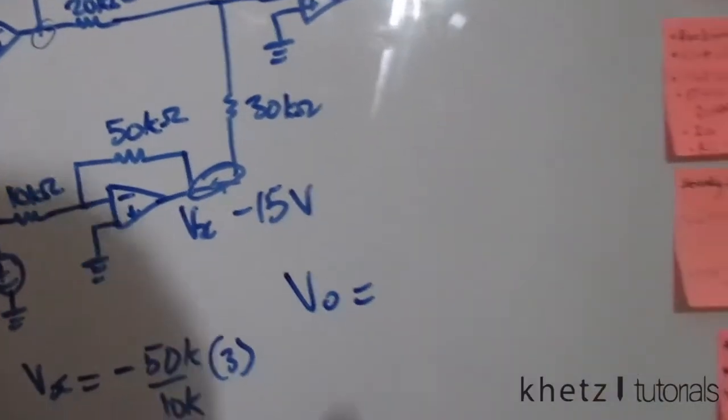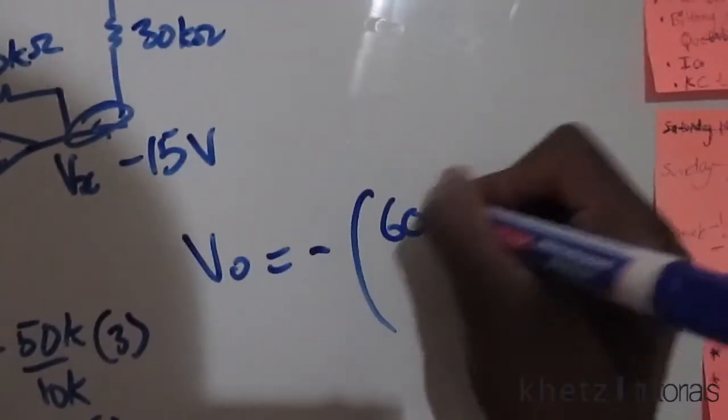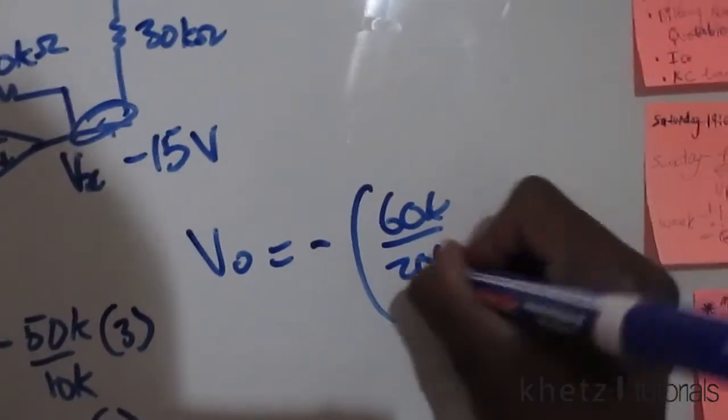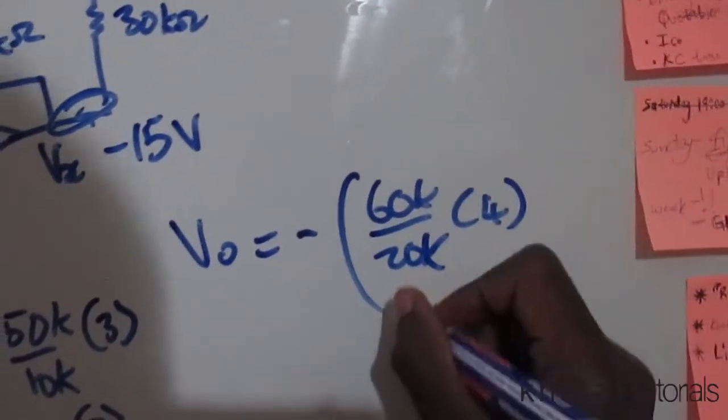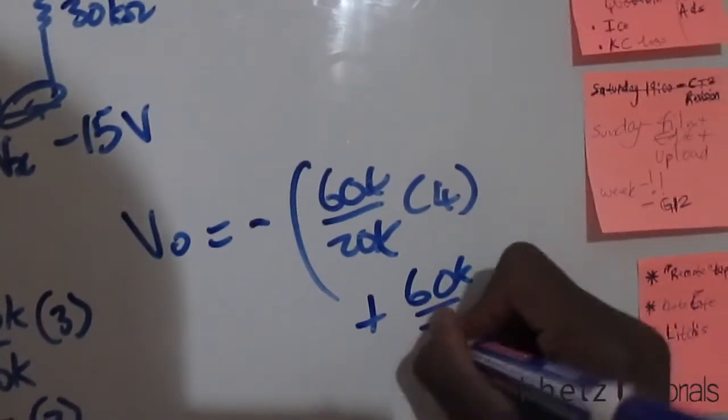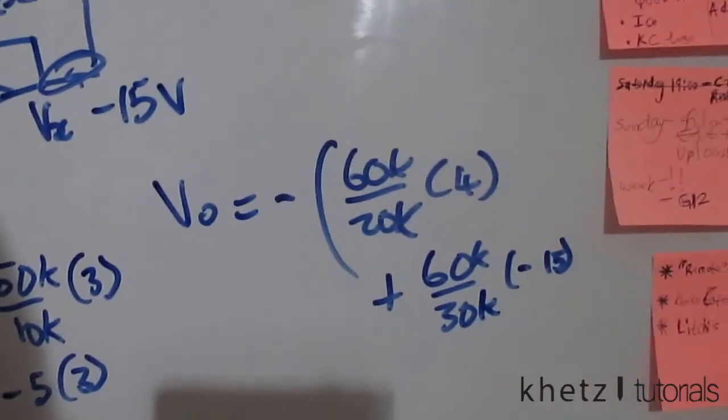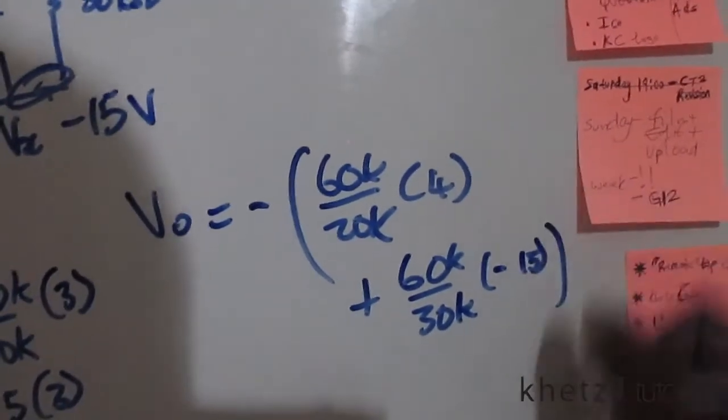is going to have two inputs so expect to have two terms. So 60k divided by 20k multiplied by 4 plus 60k divided by 30k multiplied by negative 15.